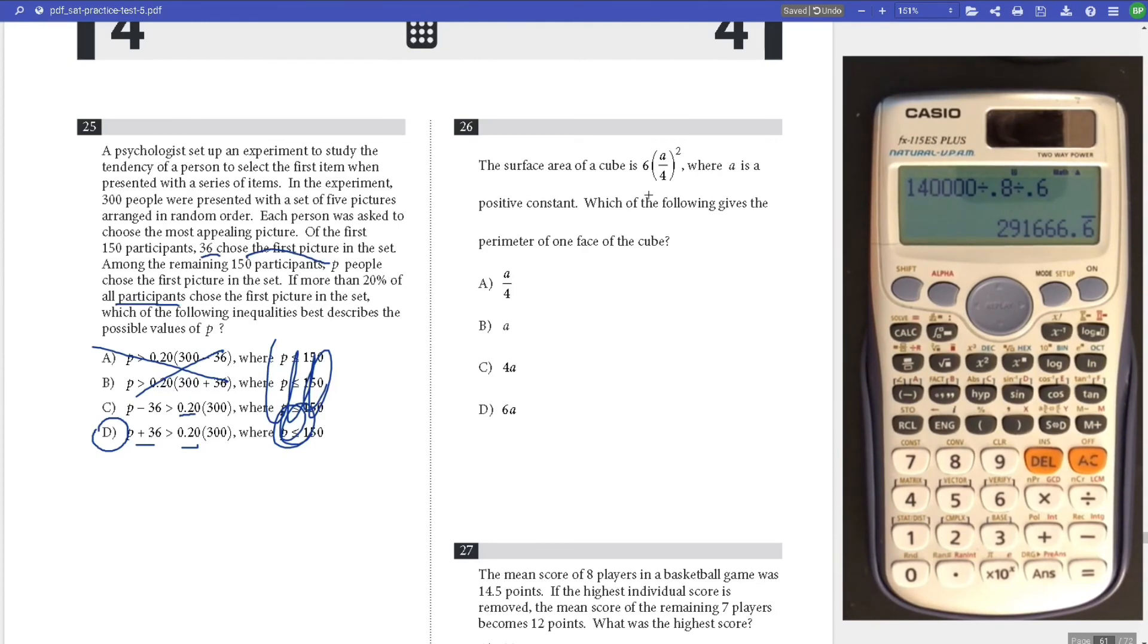Number 26, surface area of a cube is 24a squared, where a is a positive constant. Which gives the perimeter of one face of the cube? Divide by 6 because the cube has six sides to get the area of the square. Area of square would be a squared over 4. Square root that to get the side length, S equals a over 2. Times that by 4, you get 2a for the perimeter.